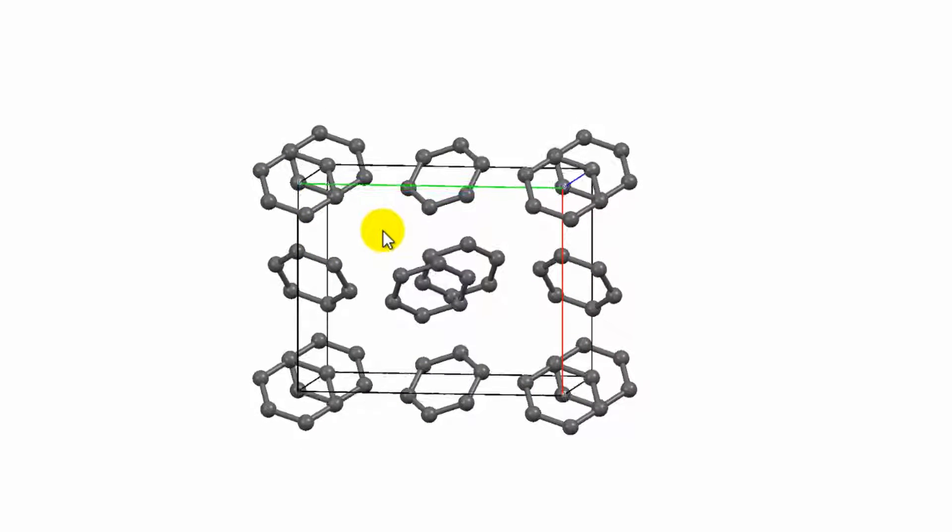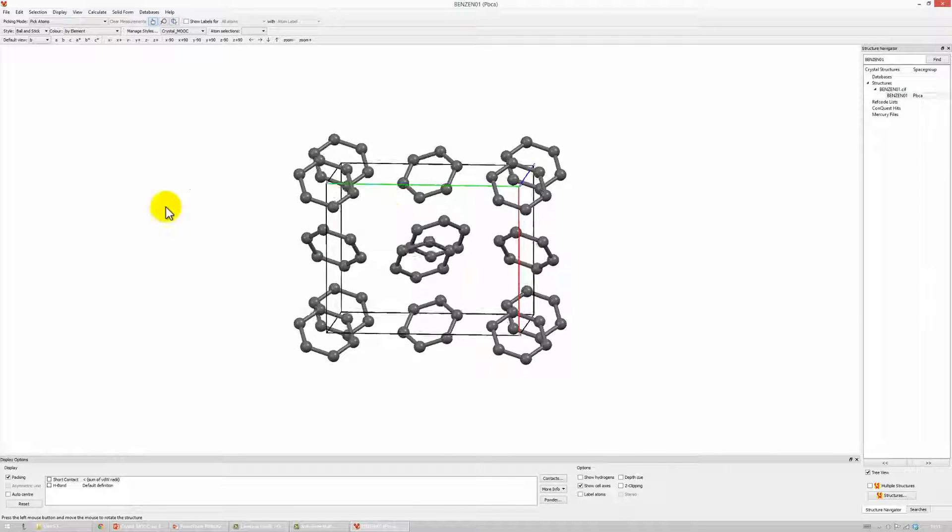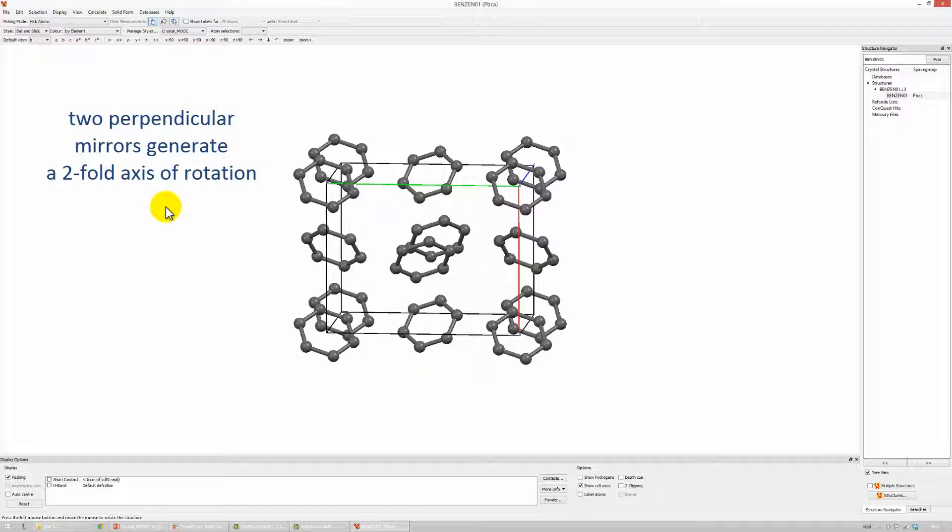The second thing I would like to illustrate to you is a parallel to one geometrical law we know already by heart. Two perpendicular mirror planes automatically generate a 2-fold axis of rotation at their point of intersection, or at their line of intersection.